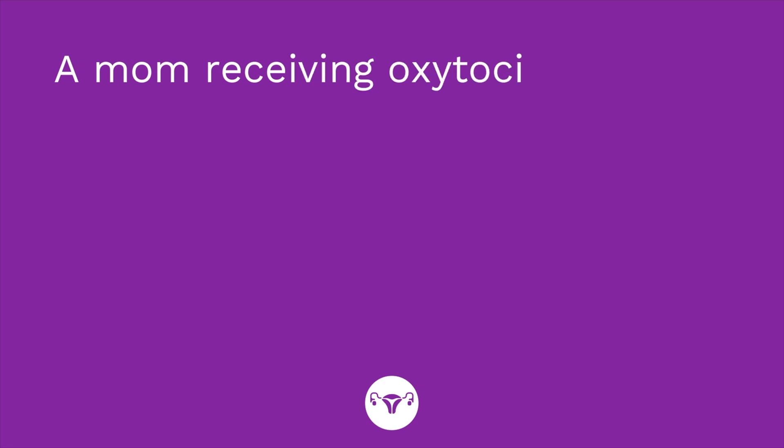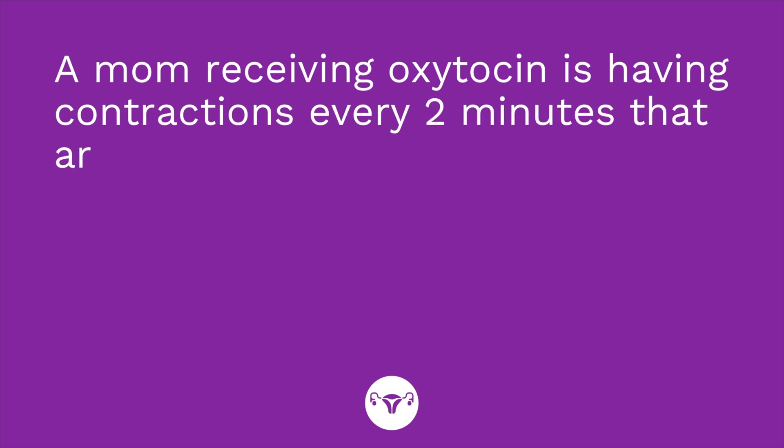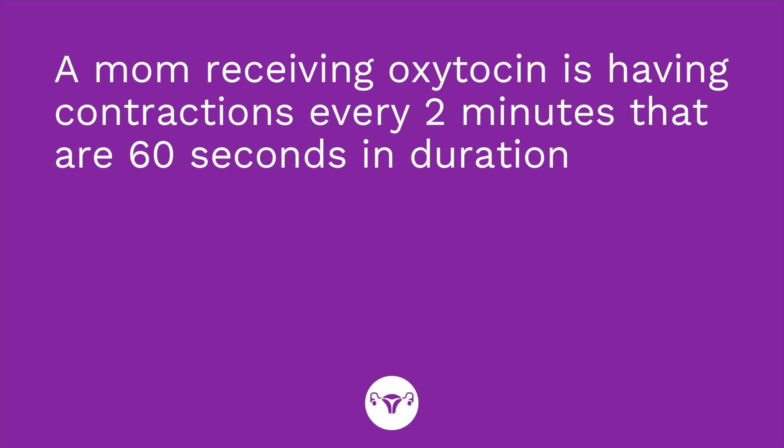Question three: a mom receiving oxytocin is having contractions every two minutes that are 60 seconds in duration. Is that cause for concern, yes or no? The answer is no. It is normal to have contractions that are 60 to 90 seconds in duration and that occur every two to three minutes. If you struggled with any of the answers, go back and check the flashcards or rewatch the video. I'll see you with more reproductive medications in my next video.